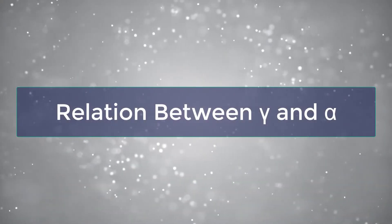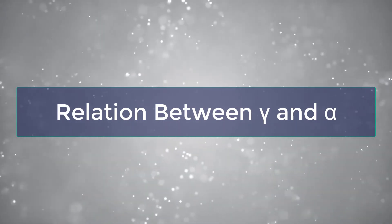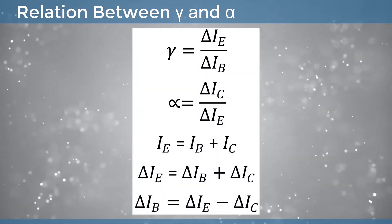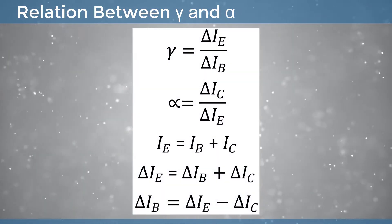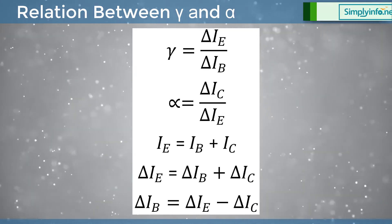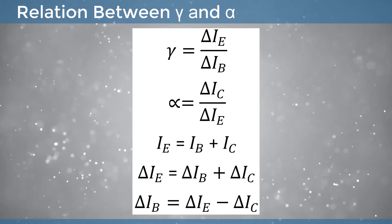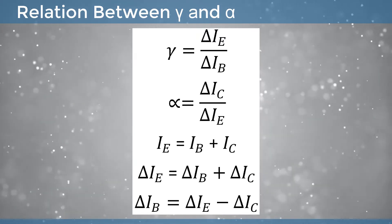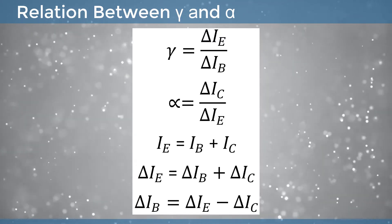Relation between gamma and alpha: Gamma is equal to delta IE divided by delta IB, and alpha is equal to delta IC divided by delta IE. Since IE is equal to IB plus IC, we get delta IE equal to delta IB plus delta IC, and therefore delta IB is equal to delta IE minus delta IC.